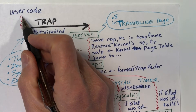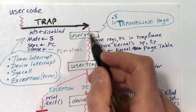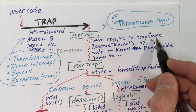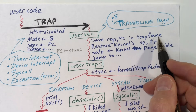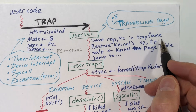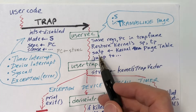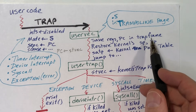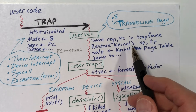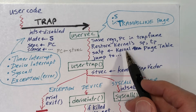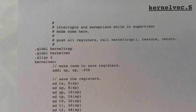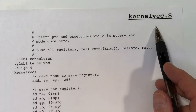When we get a trap while executing in user mode, the first thing we do is save all of the registers in the process's trap frame — I discussed that at length in an earlier video. When we get a trap while running in kernel mode, we do things a bit differently. We don't have any fixed place to store them; instead we save the registers on the kernel's stack. Now let's take a look at the code in kernelvec.s, which is the first code executed after a trap in kernel mode.